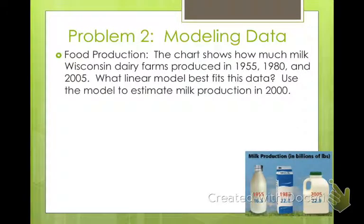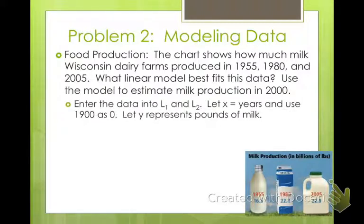Here's our first problem. The chart shows how much milk Wisconsin dairy farms produced in 1955, 1980, and 2005. What linear model best fits this data? We're going to use the model to estimate milk production in 2000. In 1955 they produced 16.5 billion pounds of milk, in 1980 it was 22.4, and in 2005 it was 22.9. We're going to enter this into our L1 and L2 lists.